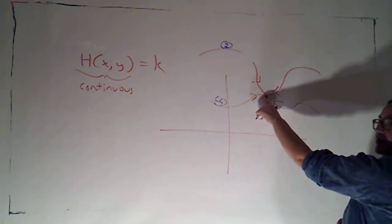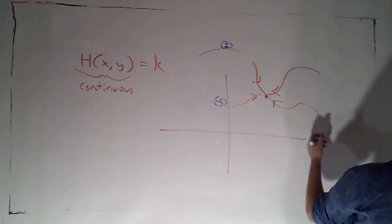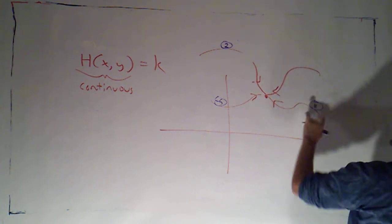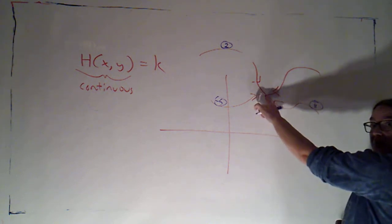Maybe this is a level curve for pi. So along this curve, h is taking on the value of pi.